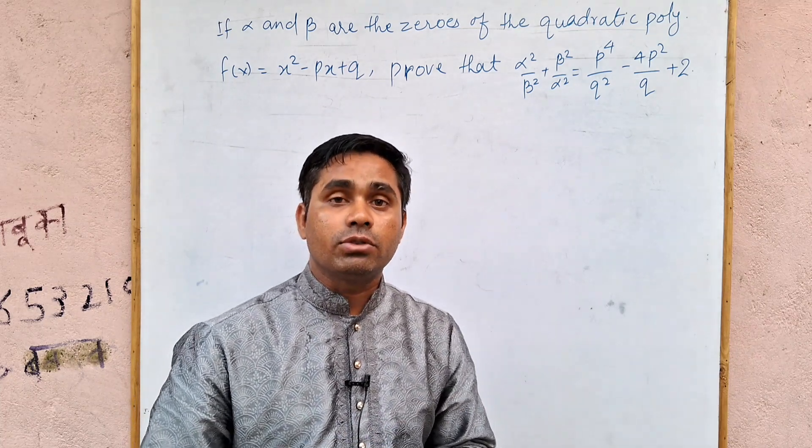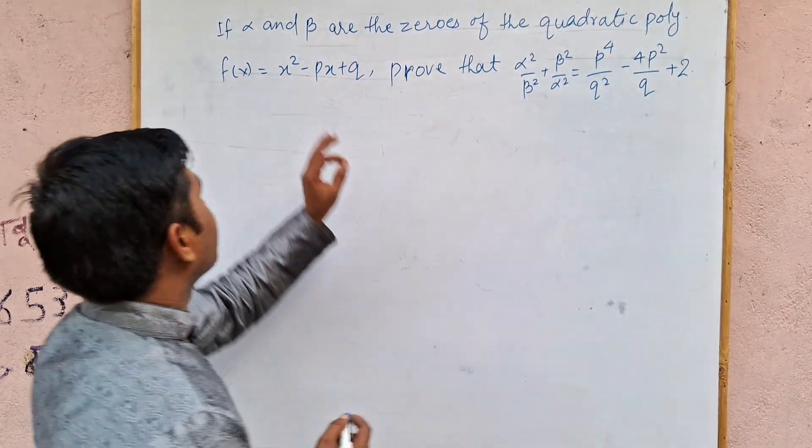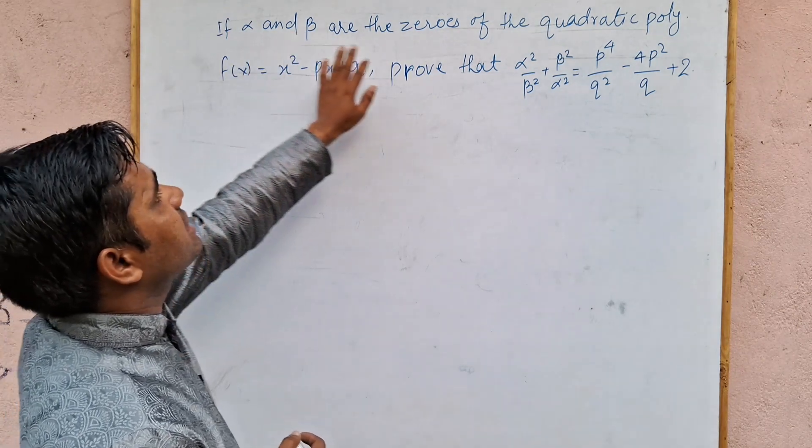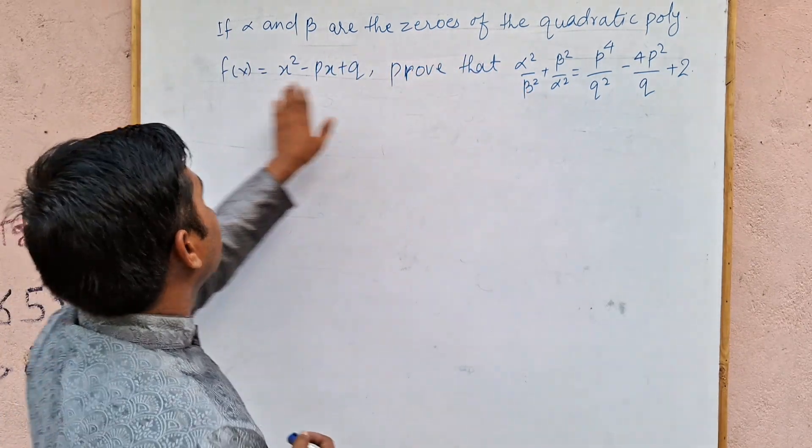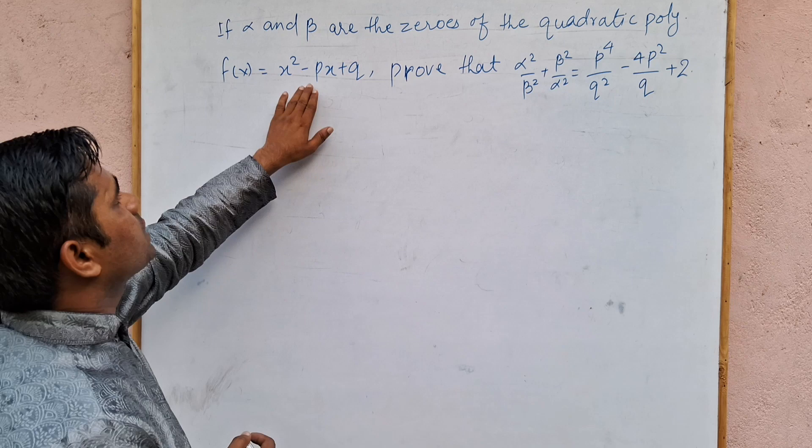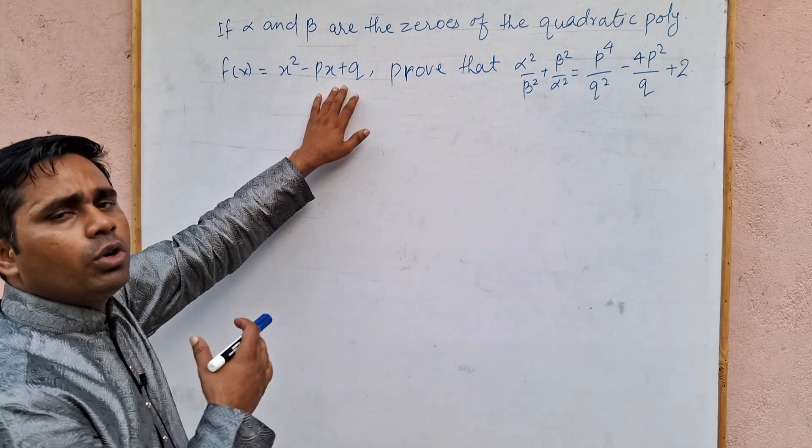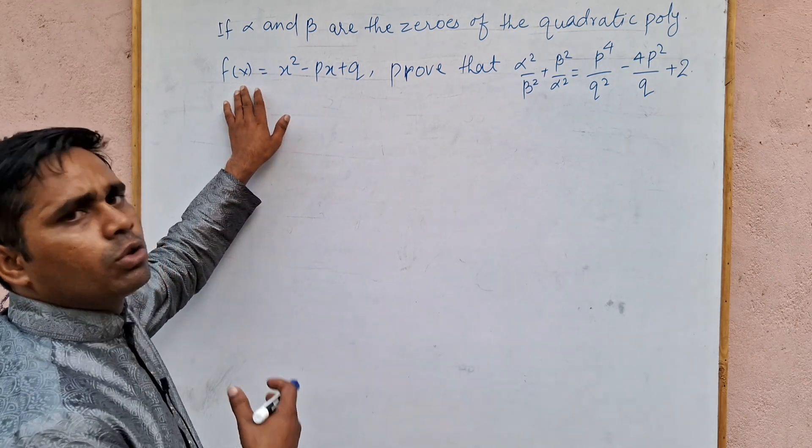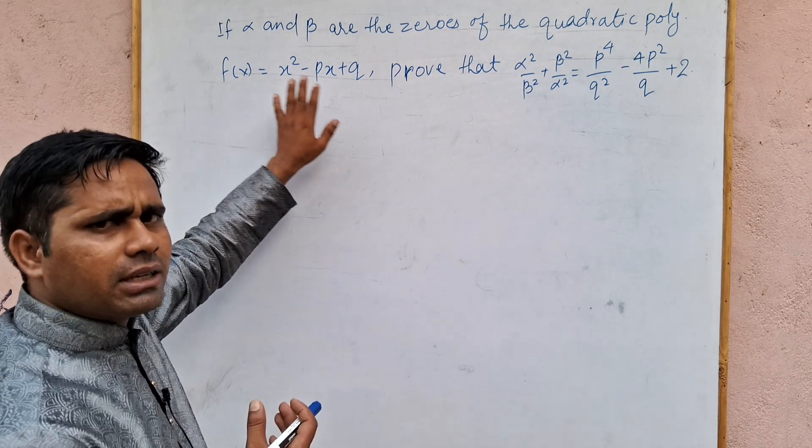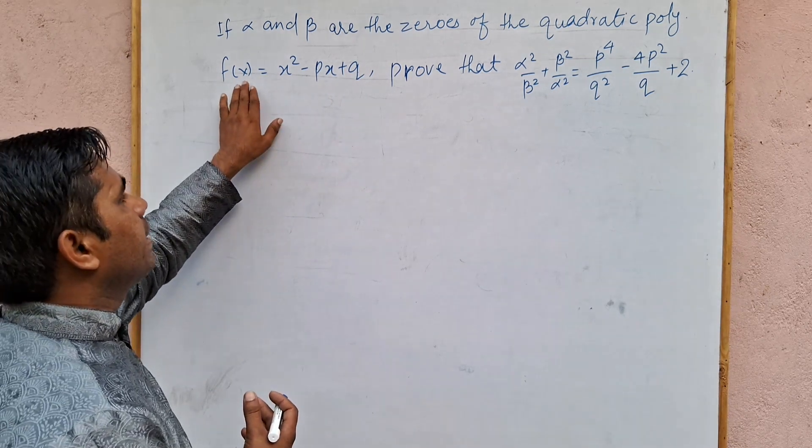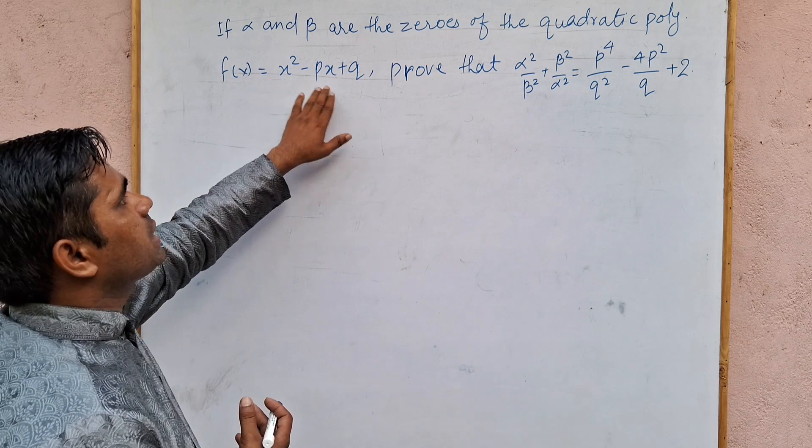This question is very important from the examination point of view. If alpha and beta are the zeros of the quadratic polynomial, f(x) is equal to x square minus px plus q. Now we are representing the quadratic polynomial as p(x). So p(x) or f(x) represent the function in x. So x square minus px plus q.